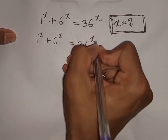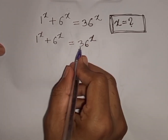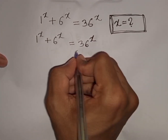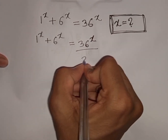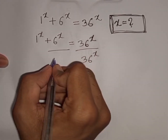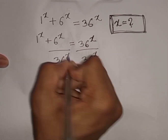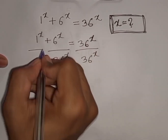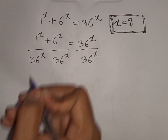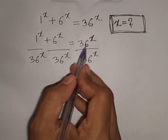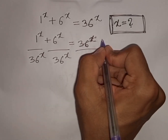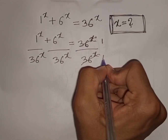Now we divide both sides by 36^x. So divided by 36^x on both sides. This will be cancelled.